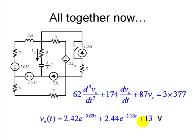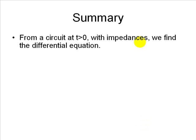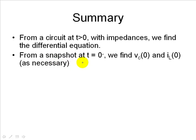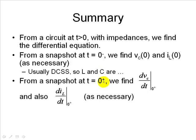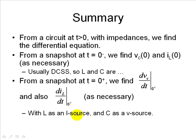The voltage in the capacitor as a function of time for t greater than zero is the sum of those two exponentials plus the final value of 13 volts — that is the final solution of this exercise. To summarize: from the circuit at t greater than zero with inductors and capacitors replaced by impedances in P, we find the differential equation. From the snapshot at t equals zero minus in steady state, we find Vc0 and IL0. From the snapshot at t equals zero plus, we find dVc/dt(0+) and dIL/dt(0+) if needed. At zero minus, inductors are wires and capacitors are open circuits; at zero plus, inductors are current sources and capacitors are voltage sources with their respective initial values.